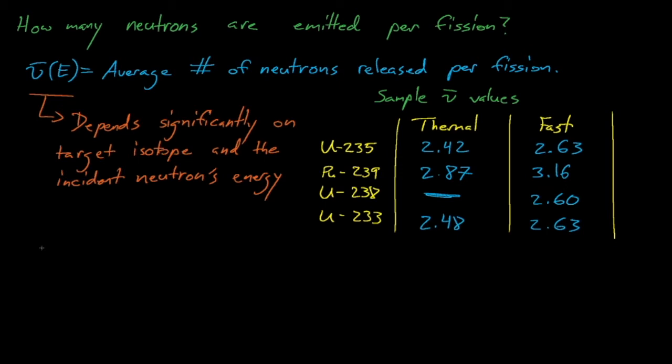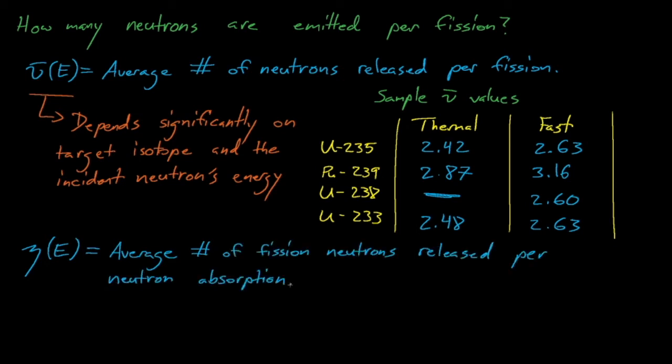We can take this nu-bar parameter and tweak it slightly to get the eta parameter, which describes the average number of fission neutrons released per neutron absorbed. The values of nu-bar and eta have a significant impact on reactor design. Even relatively small changes in nu and eta can leave us with extra or too few neutrons to feed the fission chain reaction.